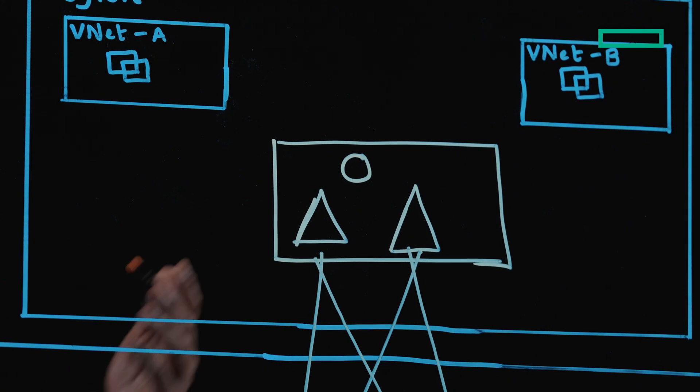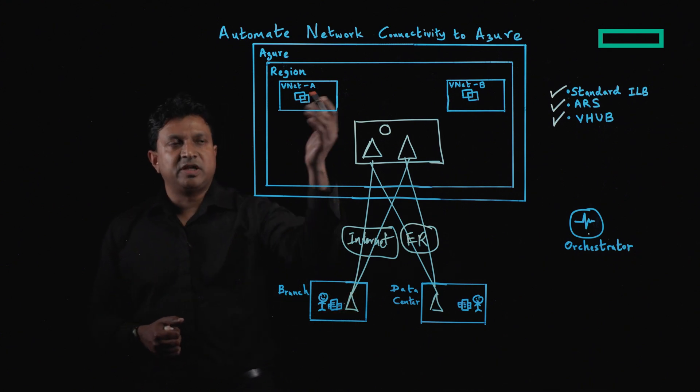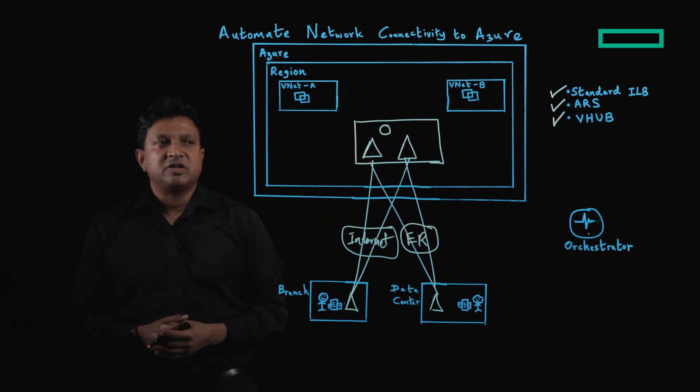One downside is that for you to send traffic from the on-prem network into Azure, you must create static routes both in the EdgeConnect as well as inside the route table in Azure.